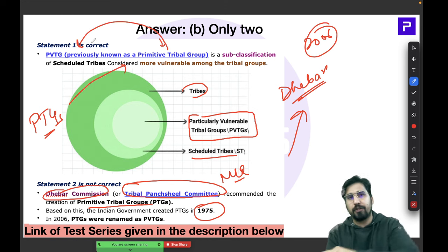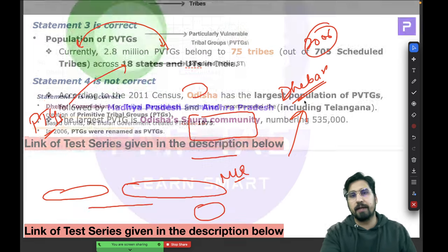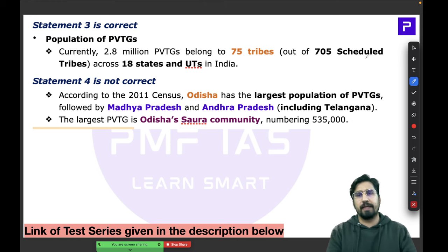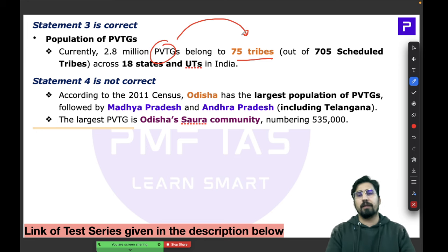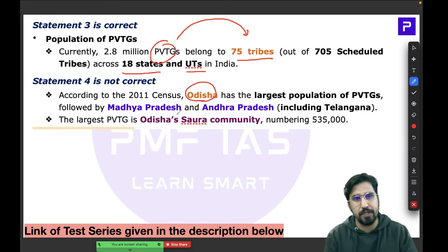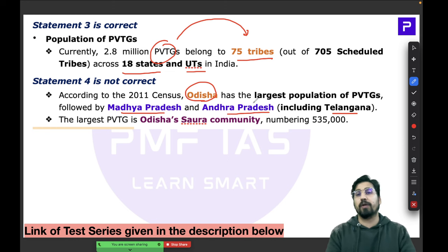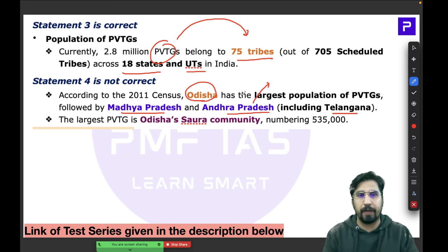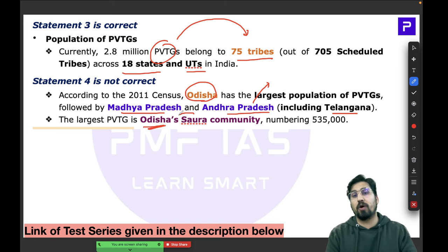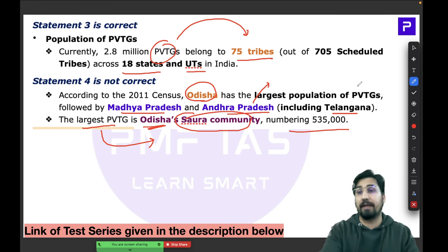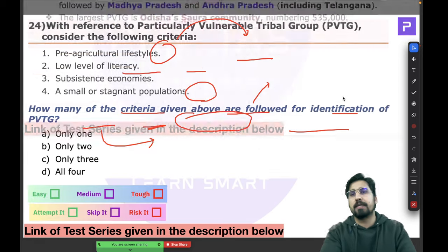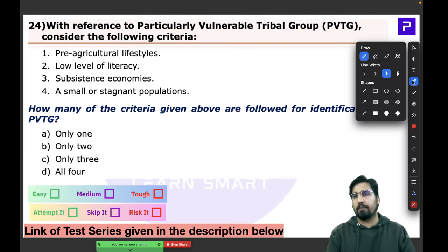There are 75 tribes classified as PVTGs, spread across 18 states and UTs of India. Odisha has the largest number, followed by Madhya Pradesh and Andhra Pradesh (including Telangana, as we refer to undivided Andhra before 2014). In Odisha, the Saura community is the largest PVTG with a population of approximately 5,35,000.